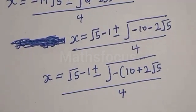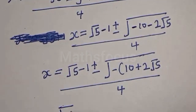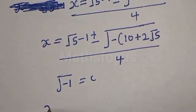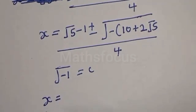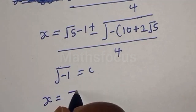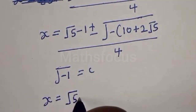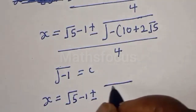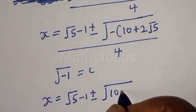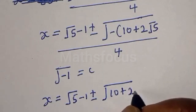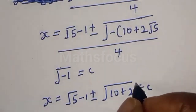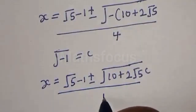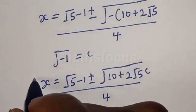therefore x equals (√5 minus 1) plus or minus square root of (10 plus 2√5) times i, all over 4. That is our first set of complex answers.